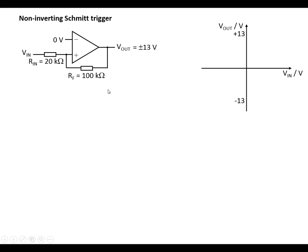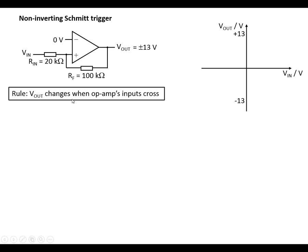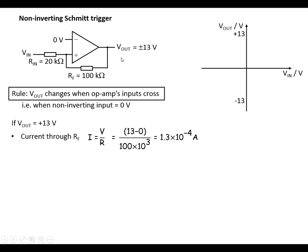The first one is the non-inverting Schmitt trigger. I'll put some values in here so we can do some calculations. The rule is: V-out is going to change when the op-amp's inputs cross, in other words when the voltage at this point crosses 0 volts. We need to find how many volts at the input will make this point 0 volts, causing the output to change. Let's assume we've got +13 volts at V-out and 0 volts at the non-inverting input, so we've got 13 volts across RF. We can work out the current through RF: V over R = 13 volts over 100k. All of this current goes through the lower resistor since the op-amp has infinite input impedance and no current flows in.